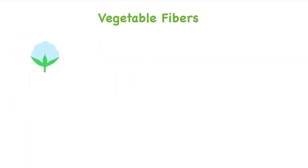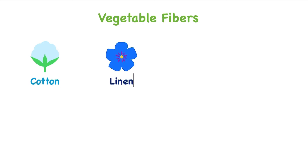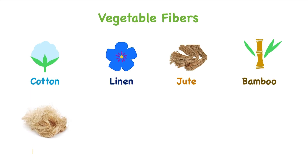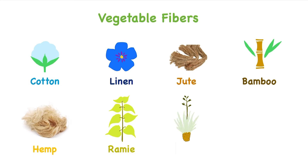Vegetable fibers are: Cotton, which is obtained from cotton plants; Linen, which is obtained from flax stalk; Jute, which is obtained from jute stalk; Bamboo; Hemp; Ramie; Sisal; and Pina. The structural composition of all the vegetable fibers are cellulose-based.